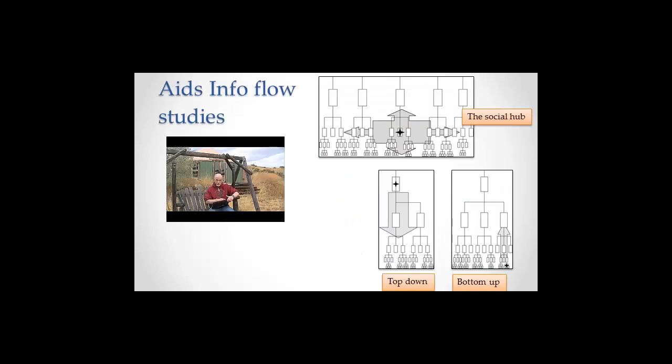Talk about information flow studies. You see three kind of paradigmatic ways that information flows in organizations. In the background of each of these pictures is an organizational chart. And an organizational chart, if you haven't seen it before, says here's the person at the top of the company,